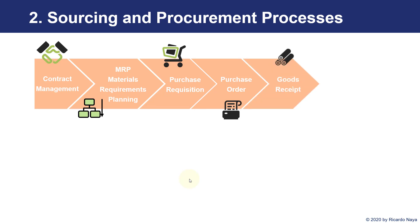Then we are going to receive these quantities. If they are services, we can receive the confirmation of the service. But normally if they are materials, we are going to make the receipt of these materials in our plant in order to enter them into our stock. And finally, once the receipt has been done, we are going to start the invoice management process where we are going to enter into the system the invoice from the vendor and start the process of paying them. That is going to be a financial process.